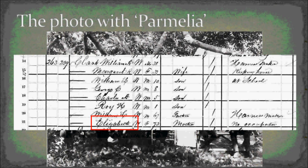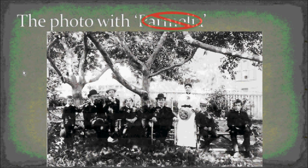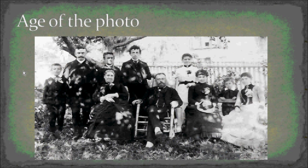Even though my father-in-law was an experienced genealogist, people make mistakes. It's kind of a trust-what-you-get-but-verify situation. So now take that photo, cross out Parmelia, and put in Elizabeth. Now I want to get to the age of this photo. Again, I'm looking at the census — looking at the ages of the boys in 1880.